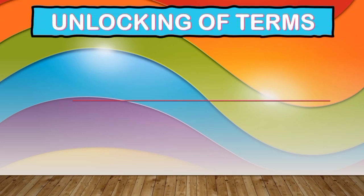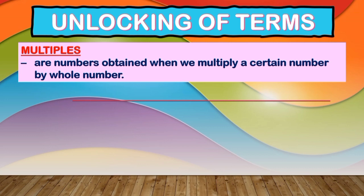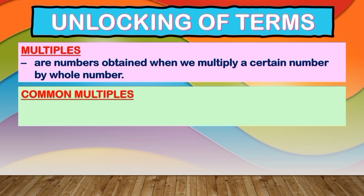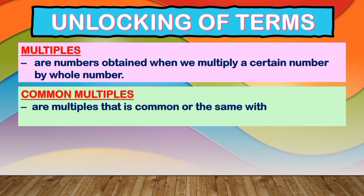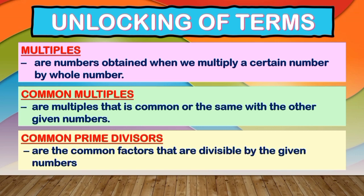Let us unlock the different terms that you might encounter during our online discussion. First, Multiples are numbers obtained when we multiply a certain number by a whole number. Second, Common Multiples are multiples that are common or the same with the other given numbers. And lastly, Common Prime Divisors are the common factors that are divisible by the given numbers.